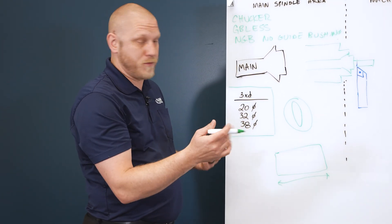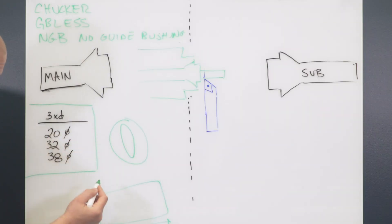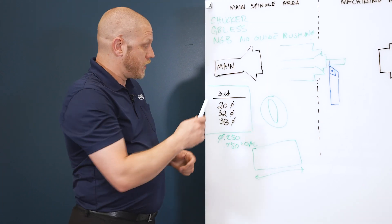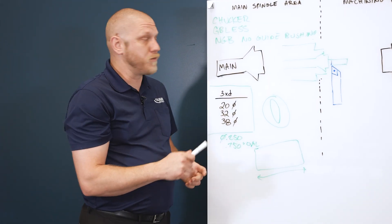Three times D rule of thumb would be: if my diameter of my part is a quarter inch, the maximum part length that I want to run is 750 thousandths. That would be my overall length. I don't want to stick out much further than that, otherwise I'm going to start getting deflection and things like that. So keep that in mind when going to chukar mode.